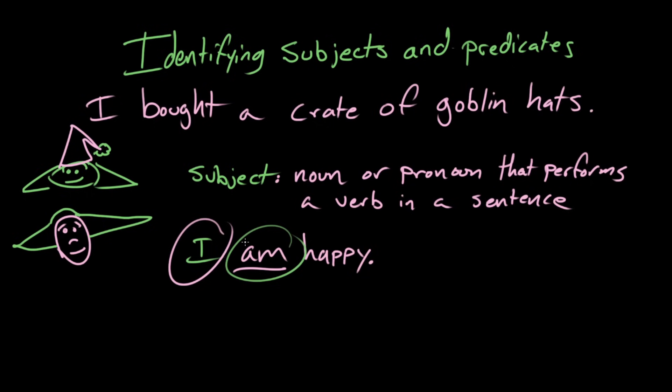What is a predicate? So a predicate is kind of all of the rest of the sentence that isn't the subject. So what it really is is like the verb and all of the parts that are related to the verb. Yeah, verb and its pals, that's good.